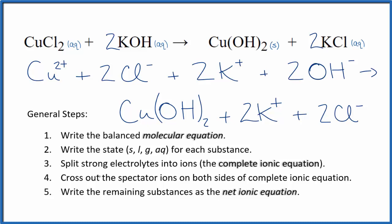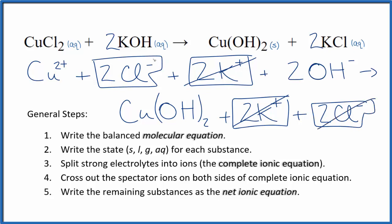Now that we have the complete ionic equation, we can cross out spectator ions. They're on both sides. So when I look at the reactants, I see two potassium ions. Two potassium ions in the products. So I can get rid of those. I have two chloride ions in the reactants and two in the products. Let's get rid of those spectator ions.